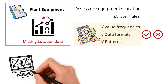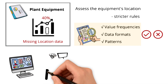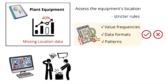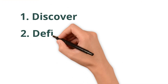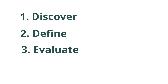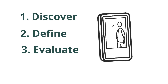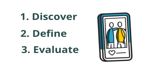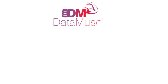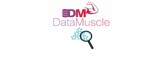When companies first run data profiling, they might see lots of defects and panic. But following these steps — discovering, defining, and then evaluating the data — they get a clearer picture of the true quality of their data. Data profiling is like a magnifying glass revealing the hidden details of your data. But it's the rules you set that determine whether those details are gems or flaws.